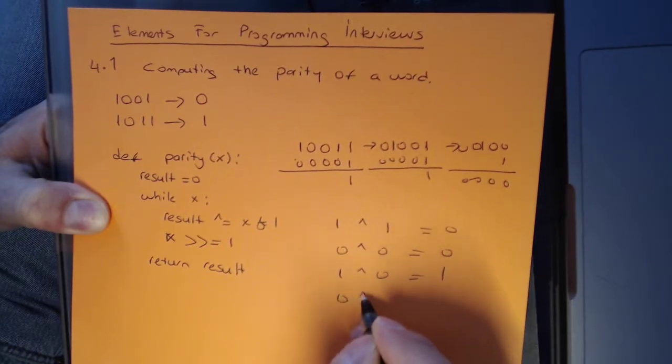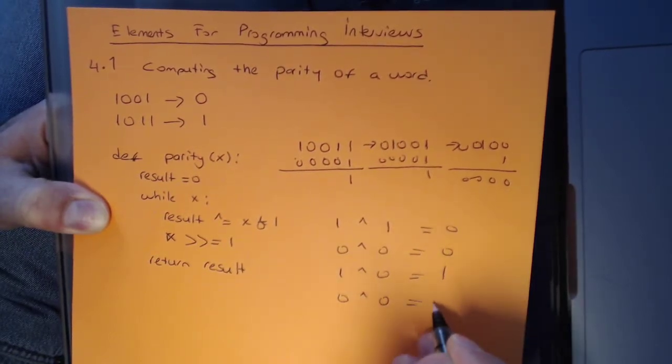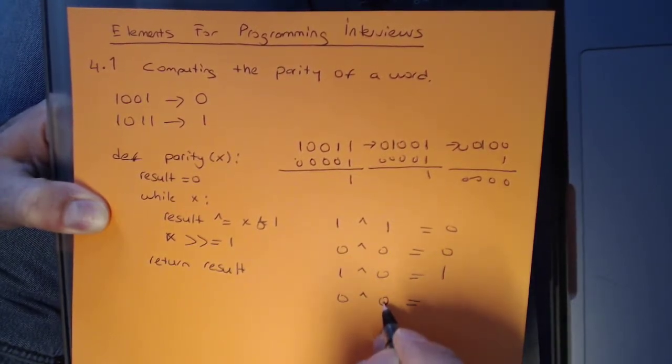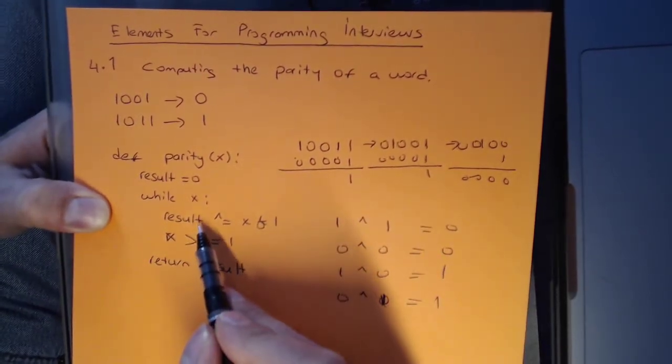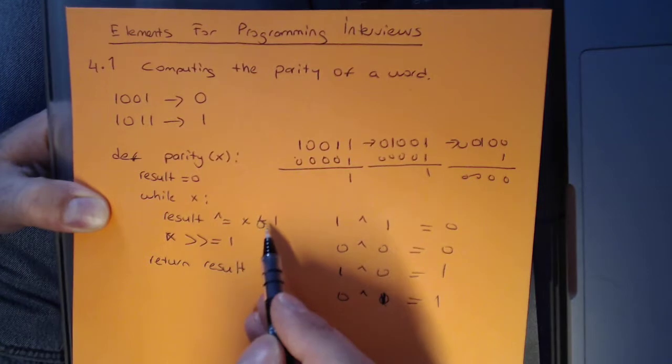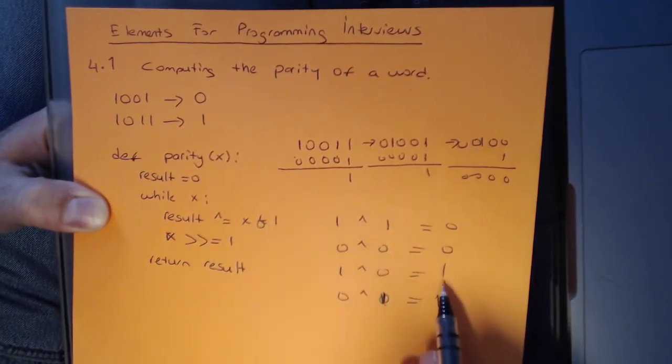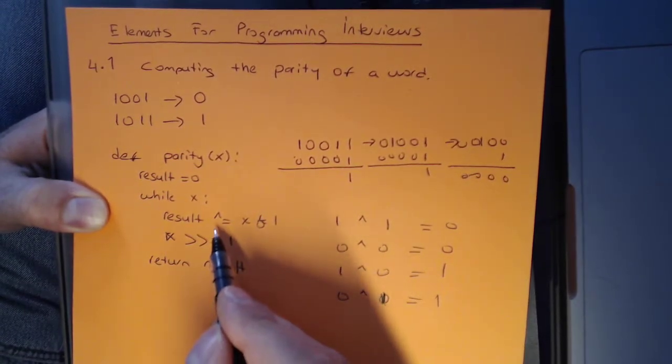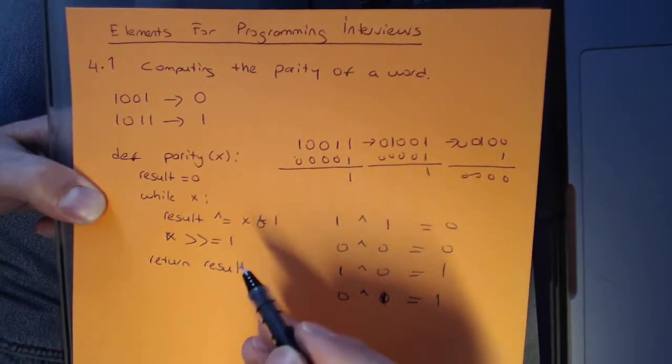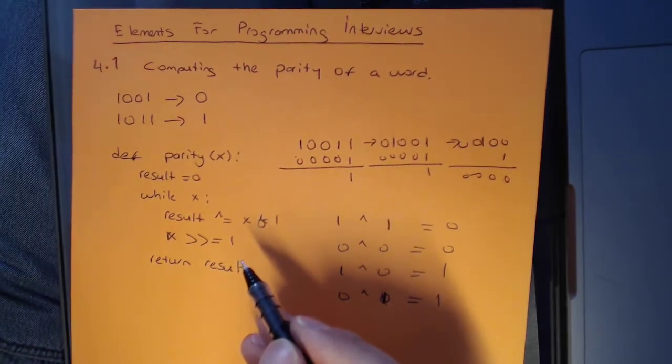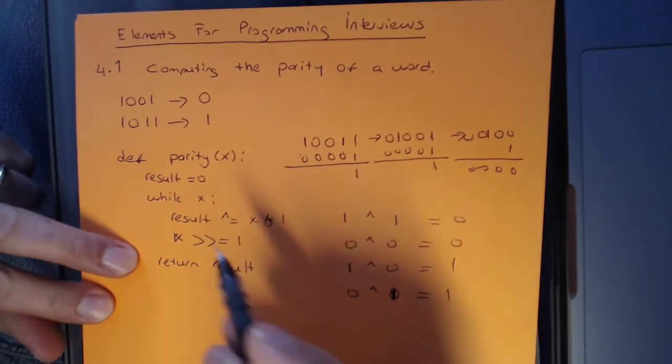This is a perfect operation to use when you are trying to take a mod of something. If our result is already 1 and you have a 0, that means you're going to get a 1. But if your result was 1 already and you're getting another 1, that means you're actually even, then your parity is 0.